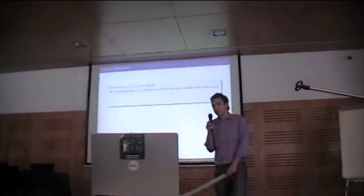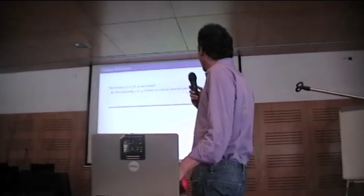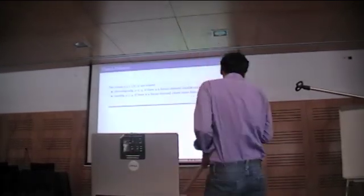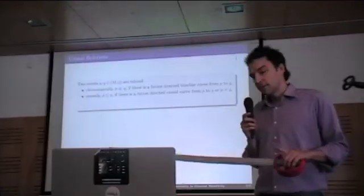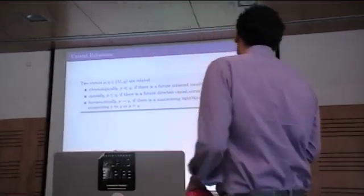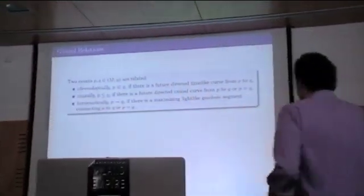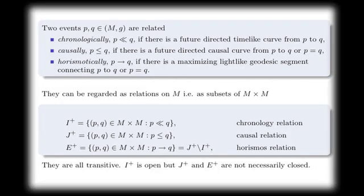First of all, two events are said to be chronologically related if there is a time-like curve between them. They are said causally related if there is a causal curve between them or they are the same. They are also said horismodically related if they are causally related but not chronologically related. And there is a theory which states that in this case they are connected by light-like geodesics.